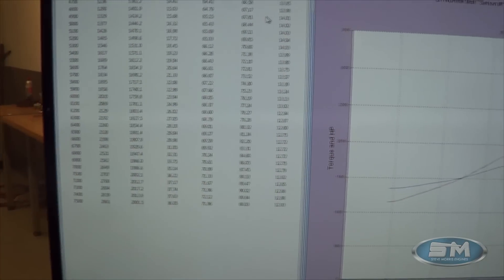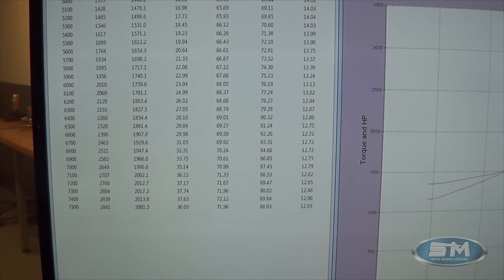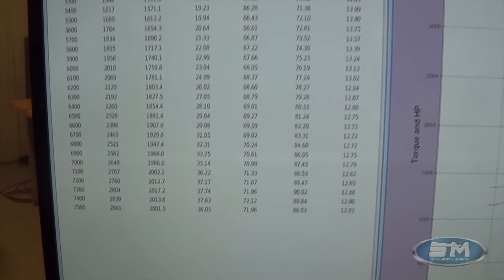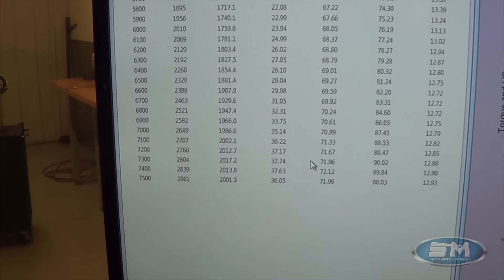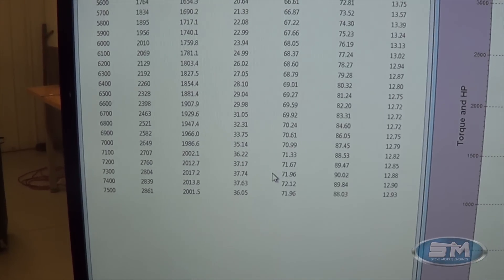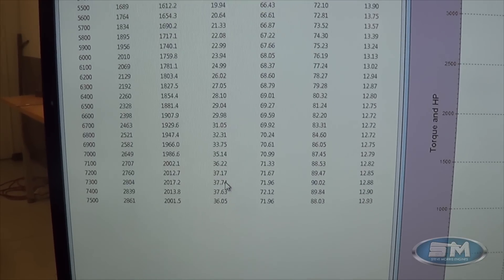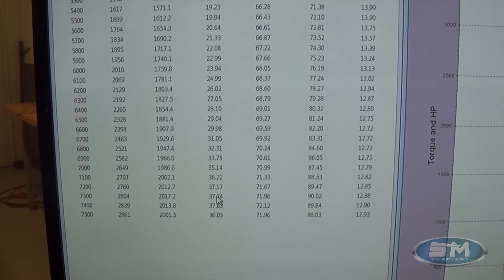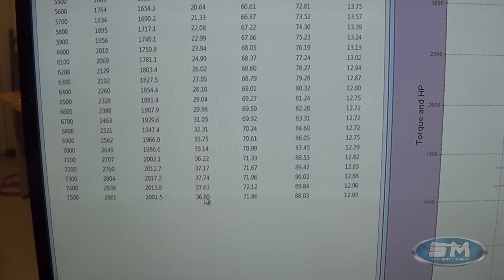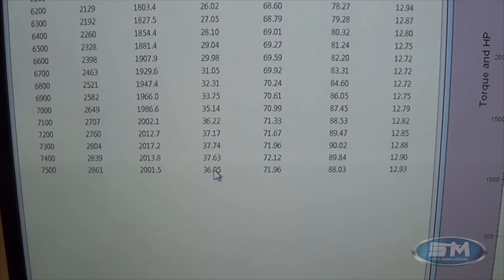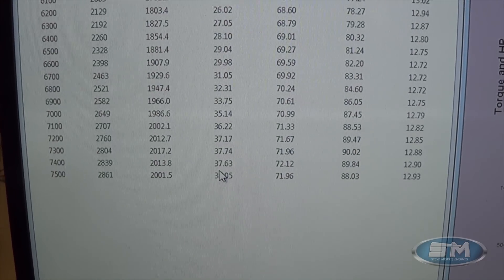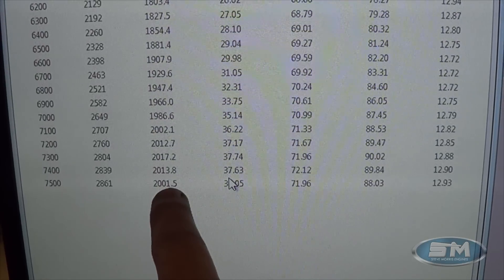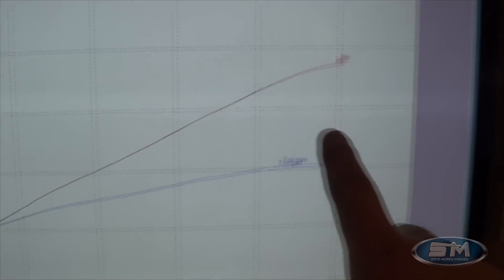As we see here, what we did is we changed pulley combination on it. Another thing that I'll point out to you, because we can go back and look at the Holley data, on this pull in particular I think we just got a couple little bad data lines. We were actually at 40 pounds of boost at 7,500 RPM.